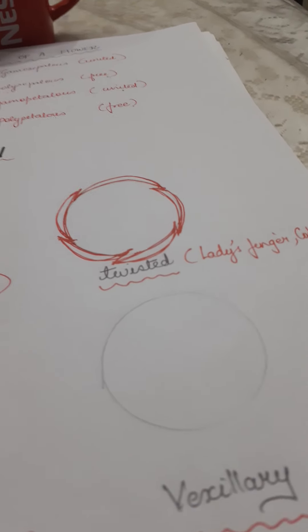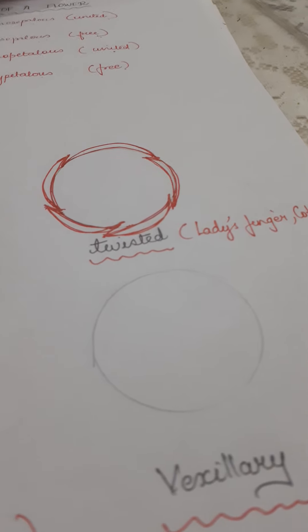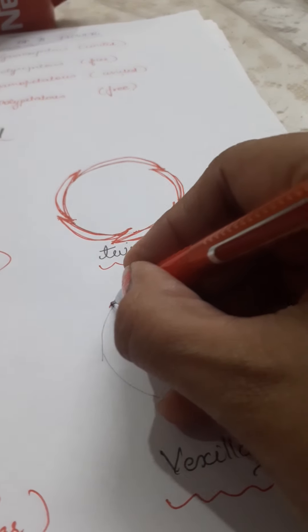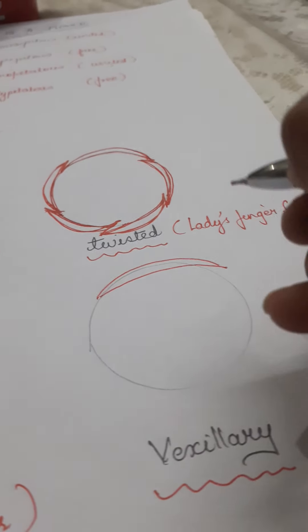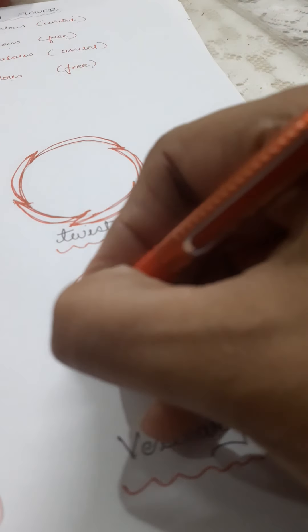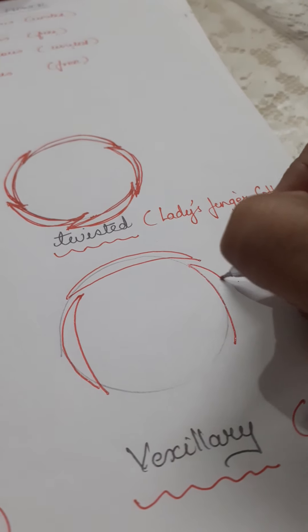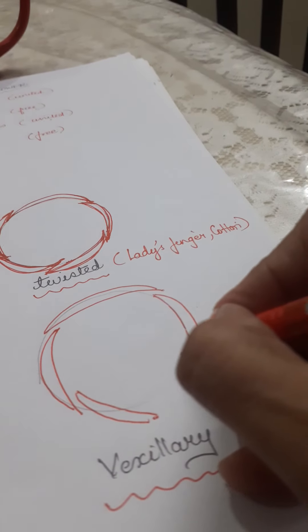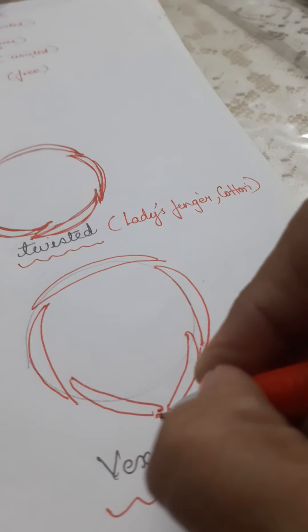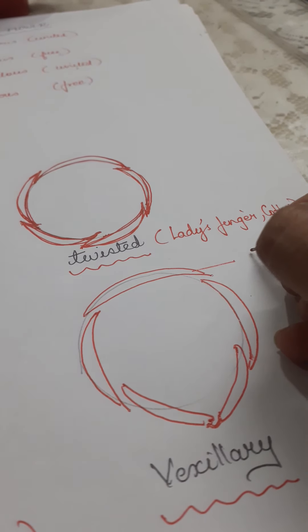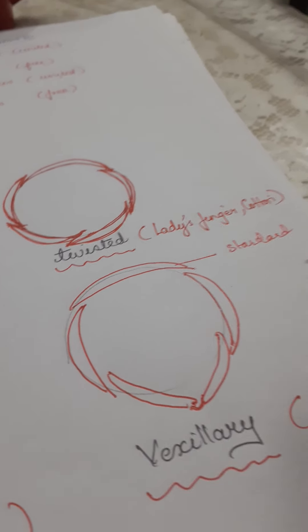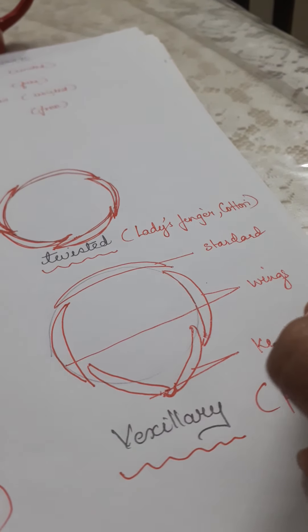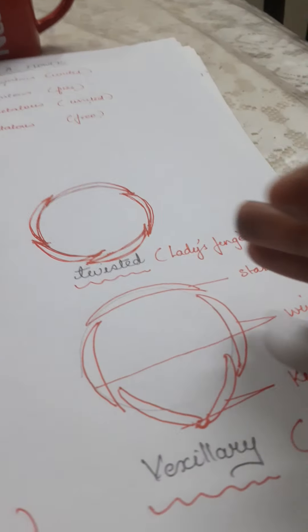And vexillary or papilionaceous. Now this is relevantly found in Pea, in the family of Pea. Where you have one completely overlapping like this, and this is known as standard petal. Then two are present like this, they are wings. And then another two are keels, which are present in this way, and they are jointed like this. So you have three different kinds. One is standard petal, then two are wings, and then last two are keels. So five of them are there, but you can see the variation.